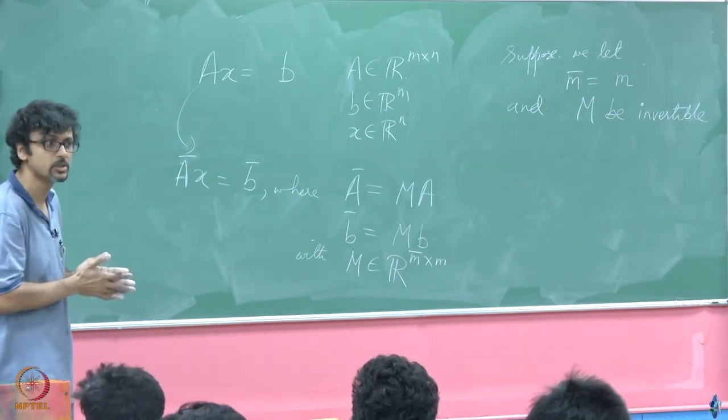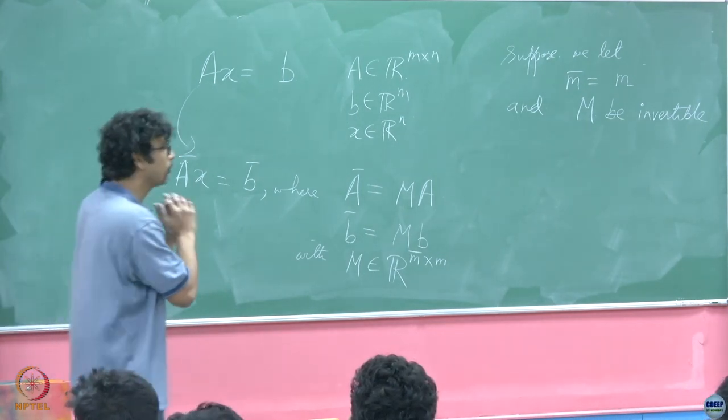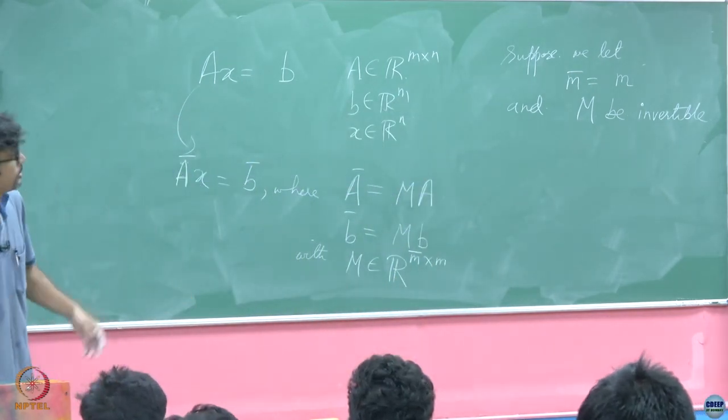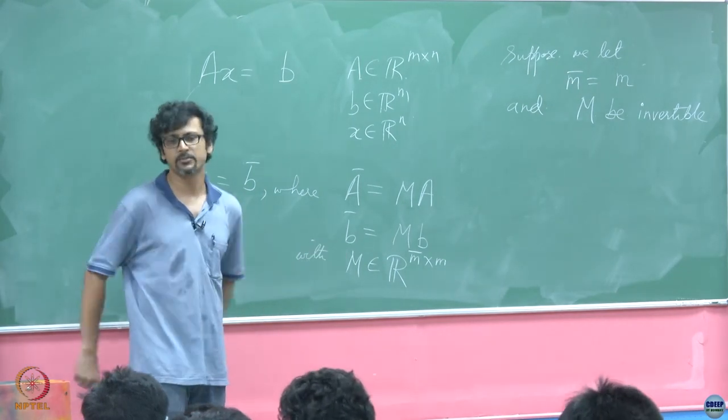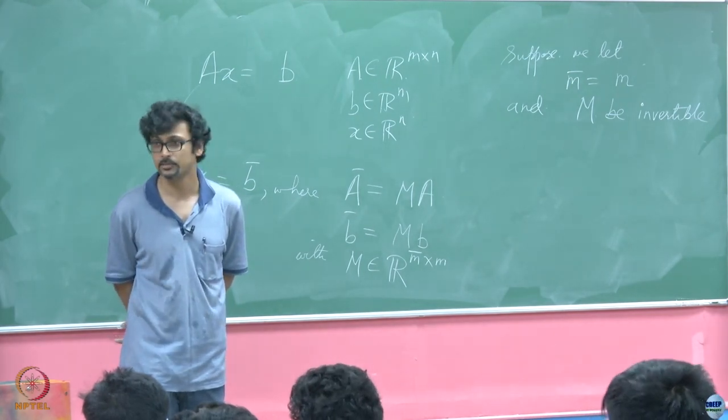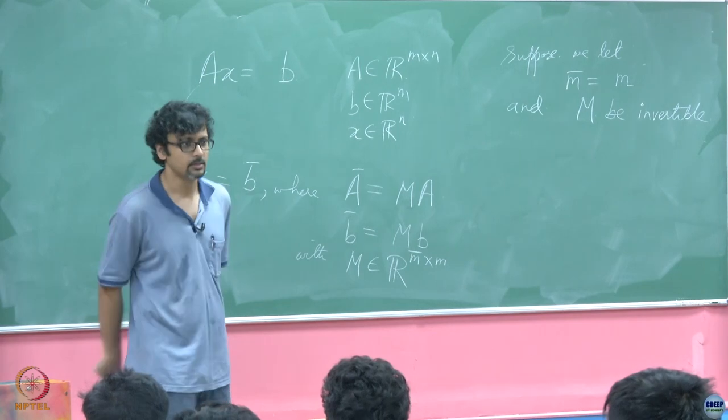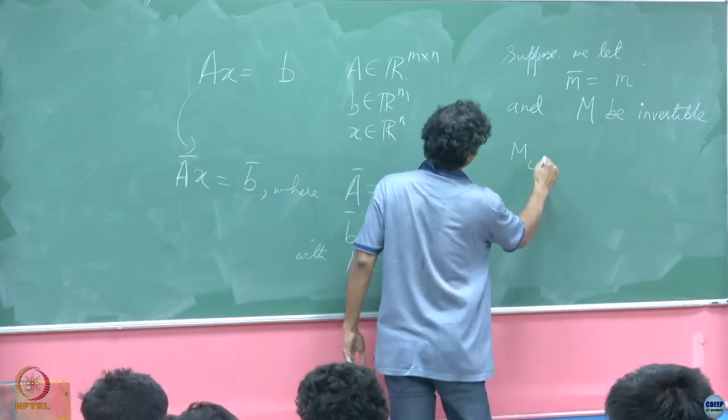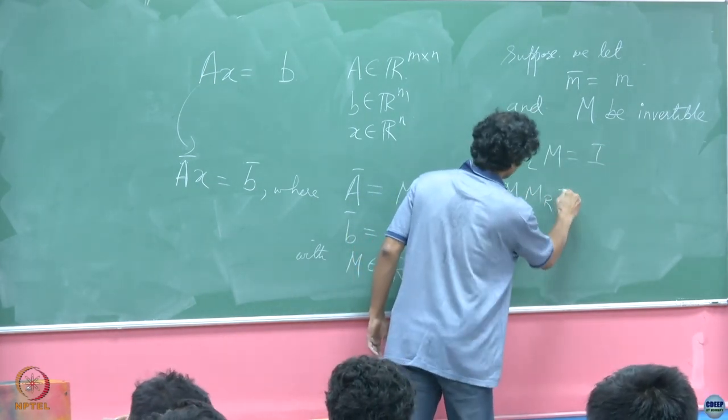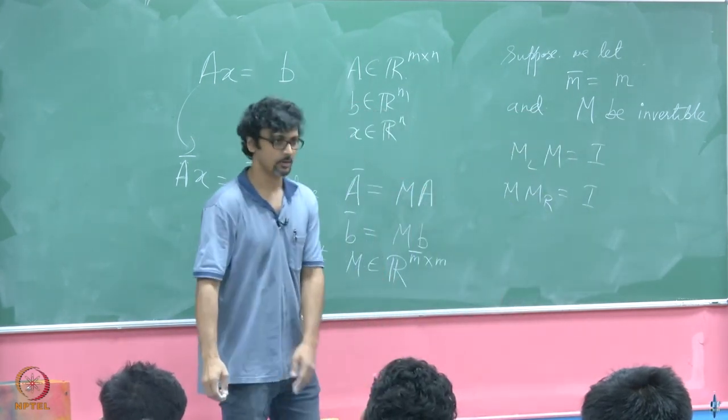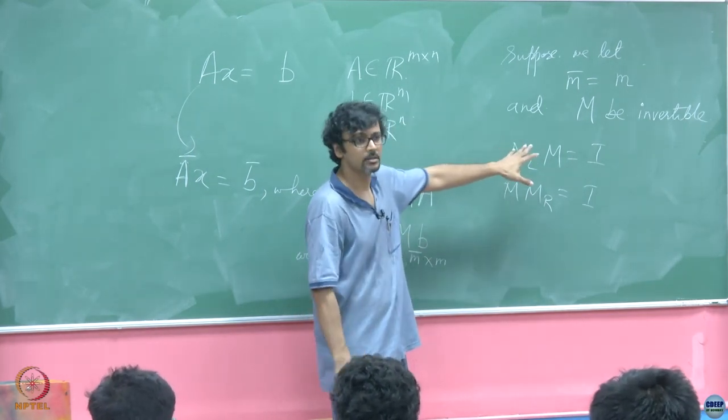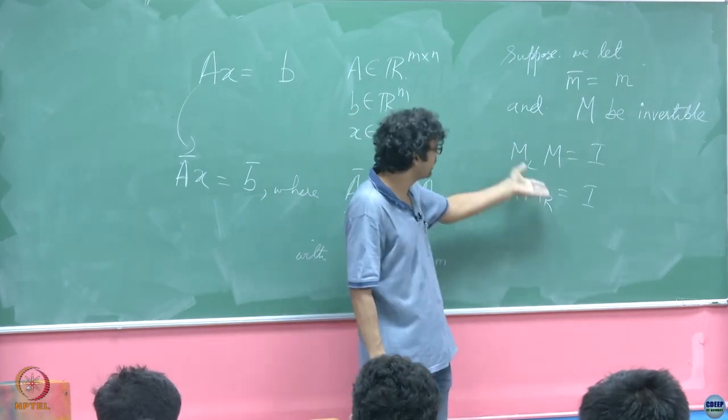But now, suppose we let m bar equal to m, and M be invertible. So, we have cooked up an M which is a square matrix. From the original system of m equations, we have cooked up another new set of m equations. Are you all aware of how you can show that a square matrix if it is invertible then its left and right inverse must be the same?